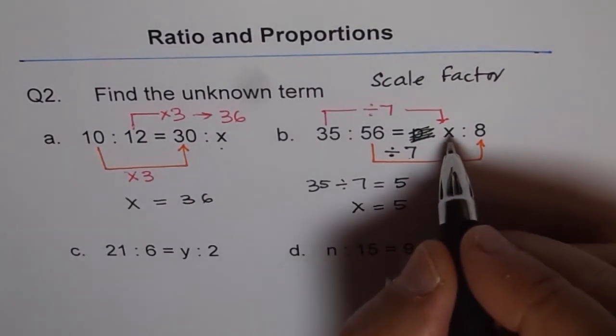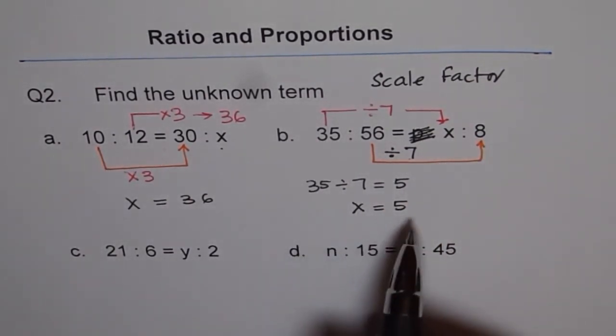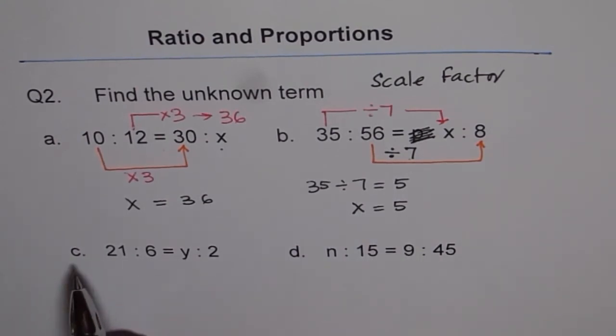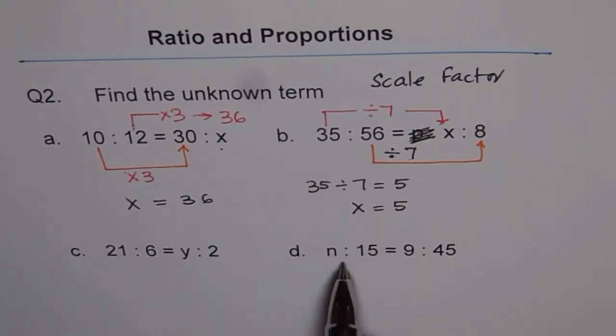Do you see that? So our x is 5 in this case. So you follow these strategies and solve c and d. C is 21 is to 6 equals to y is to 2 and d is n is to 15 equals to 9 is to 45. Find the scale factor and then solve your answer. Get your answer. Thank you.